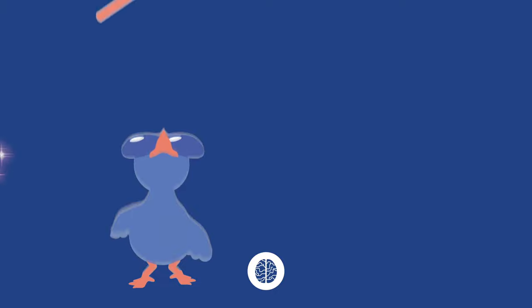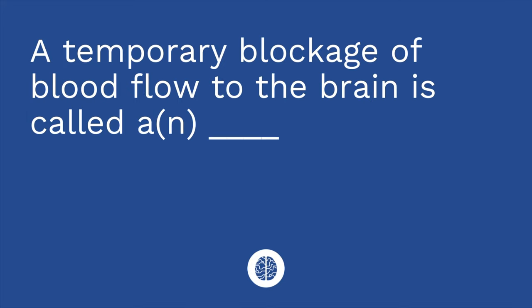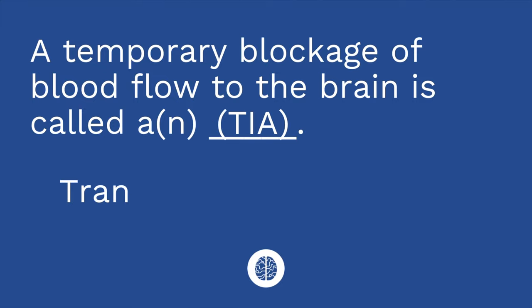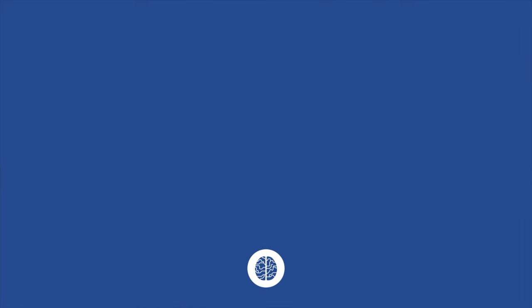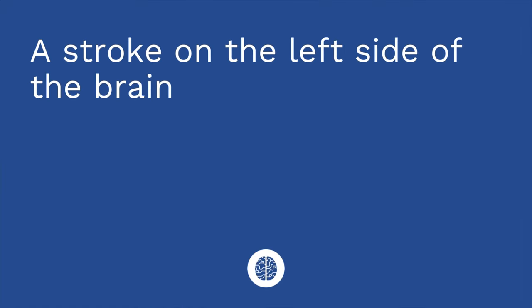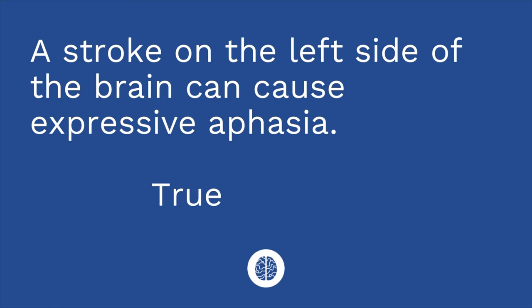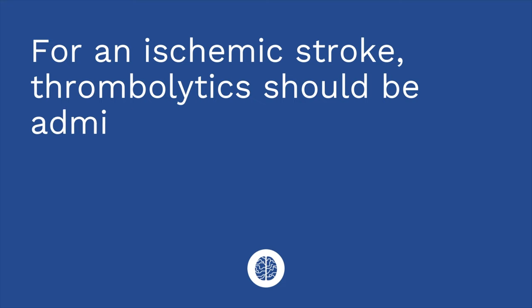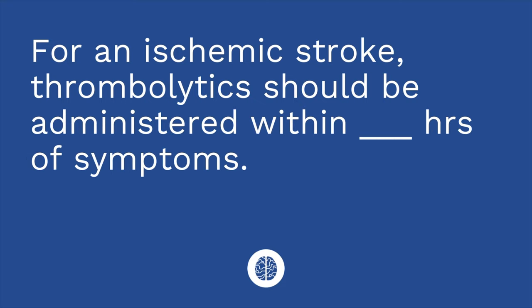Time for a quiz — I have three questions. First: a temporary blockage of blood flow to the brain is called a blank. The answer is a TIA, or transient ischemic attack. Question two: a stroke on the left side of the brain can cause expressive aphasia — true or false? The answer is true. Remember: left side, language. Question three: for an ischemic stroke, thrombolytics should be administered within blank hours of symptoms. The answer is three — they need to be administered within three hours of symptoms.